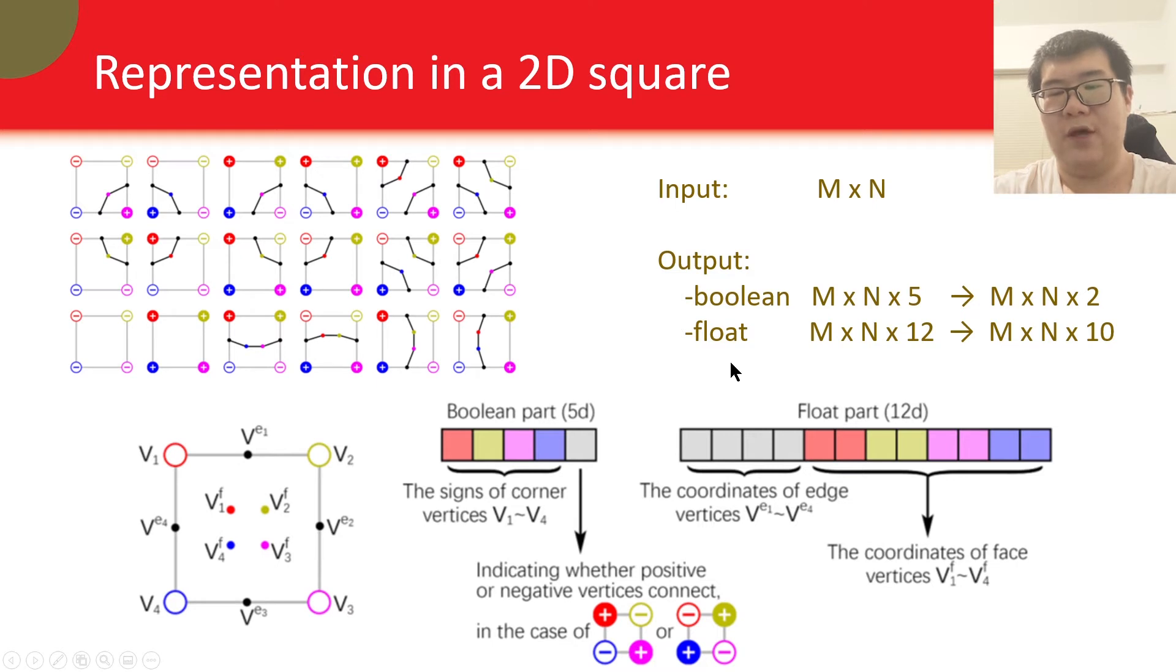Now let's think about 2D marching cubes, or marching squares, where we use a neural network to predict outputs. The input would be n by n, a 2D grid. An output would be n by n by 5 for the boolean part, and n by n by 12 for the float part. But there are redundancies. For example, for corner signs, we only need to store this one, because this one will be stored in this adjacent square, and this one in this square, and this one in this square.